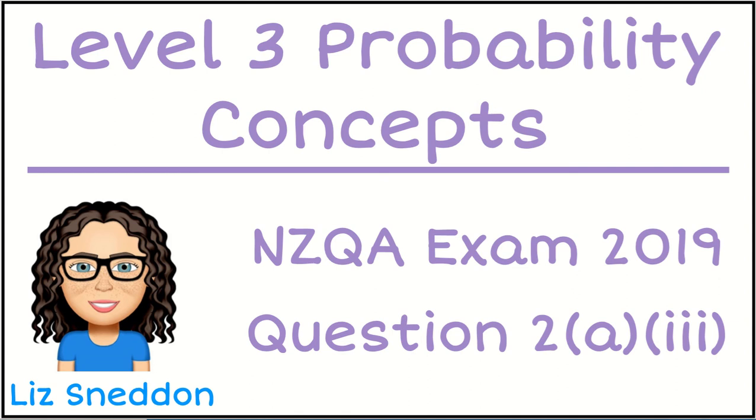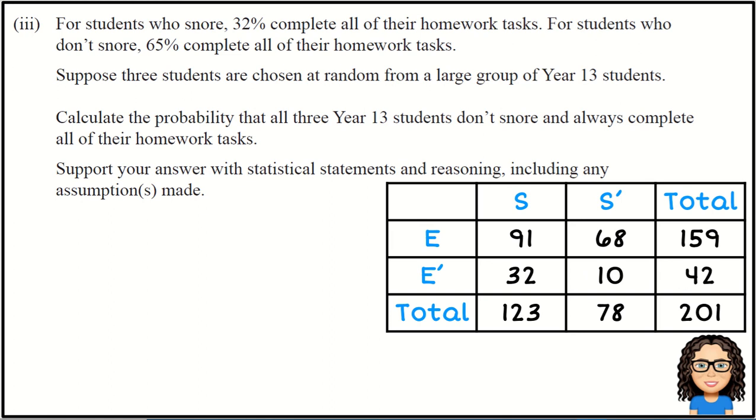So we've got some more information here. I've copied the table from previous, and we've got this additional information at the top. It says for students who snore, that's telling me given that somebody snores, the probability that they complete their homework is 0.32.